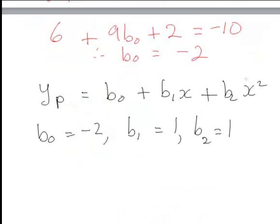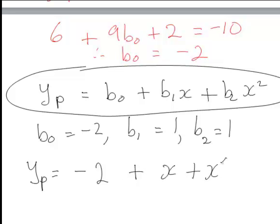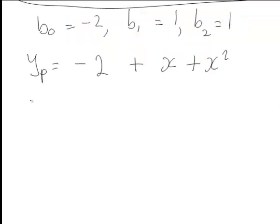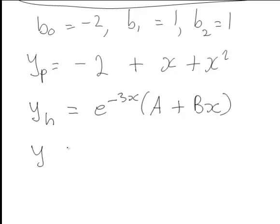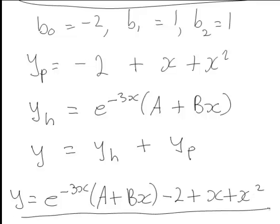So the particular integral is yp equals negative 2 plus x plus x squared. We also found earlier that yh equals e to the negative 3x times (a plus bx). The general solution of the DE is y equals yh plus yp, giving e to the negative 3x times (a plus bx) minus 2 plus x plus x squared. That is the general solution of this second order DE.